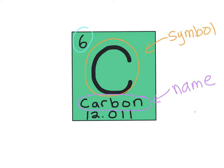At the top left is the atomic number, which tells you the number of protons an element has. Underneath the name of the element is the atomic weight. This number is the weighted average of the atomic masses of all isotopes of the element.